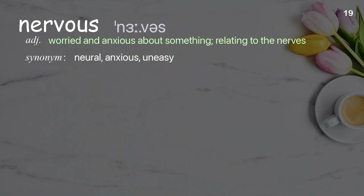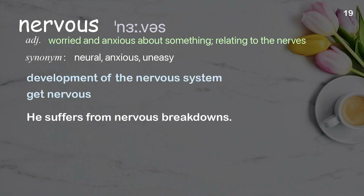Nervous: worried and anxious about something; relating to the nerves. Examples: Development of the nervous system. Get nervous. He suffers from nervous breakdowns.